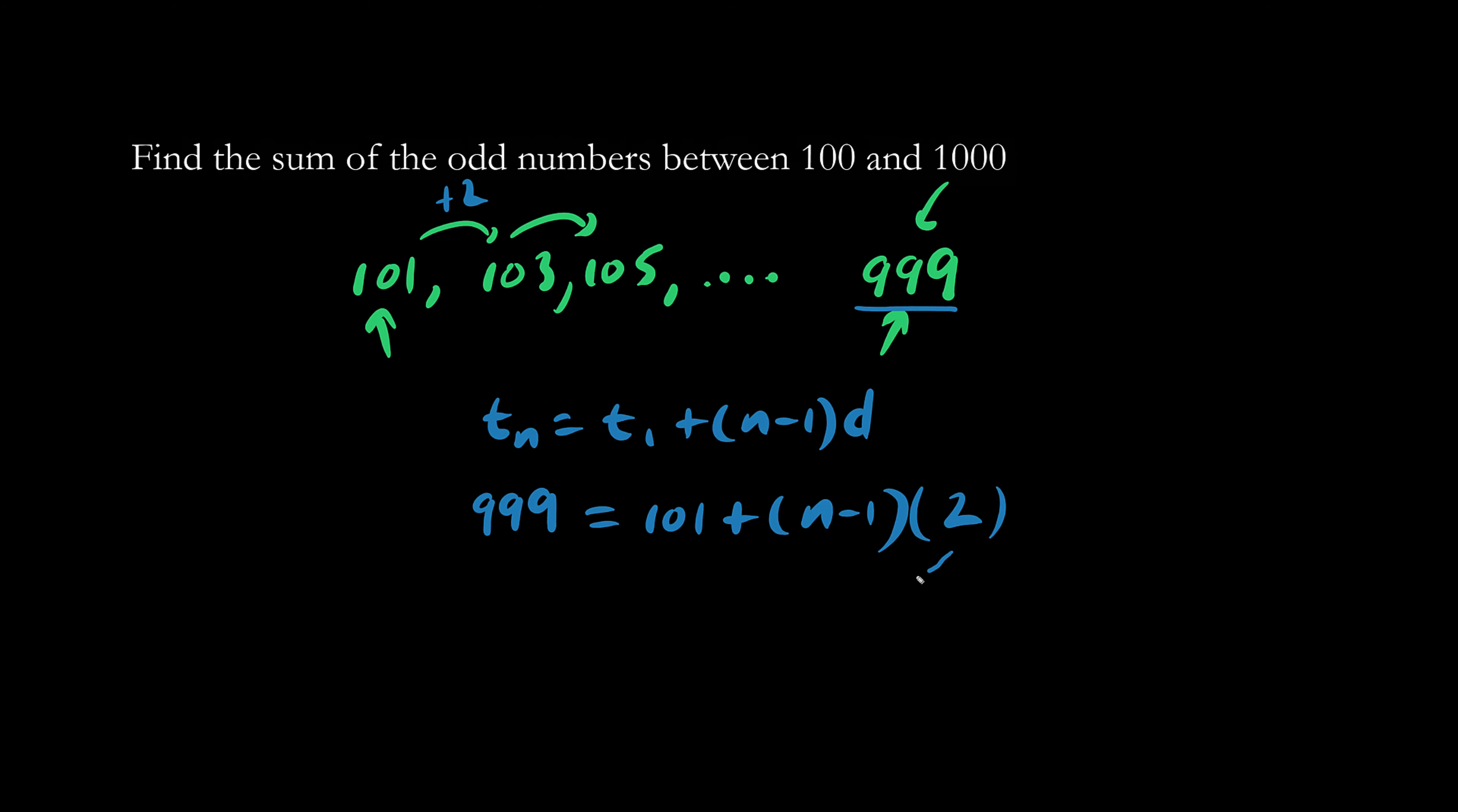We use distribution and we get 2n minus 2. Now we're going to move this 101 over to the left side. 999 minus 101 is 898.